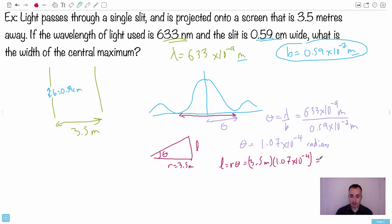Now here's the thing. This distance that I found, that's only the distance right here. I've just found this. If I want the width of the central maximum, I have to double that. So the width of the central maximum, it'll just be equal to 2 times 3.75 times 10 to the minus 4 meters. So I'll do that times 2 on my calculator.